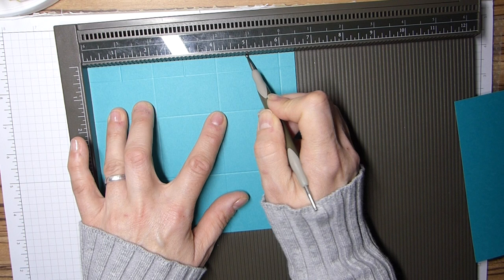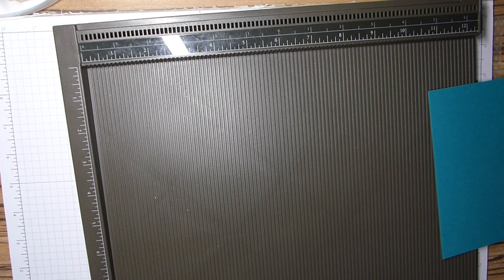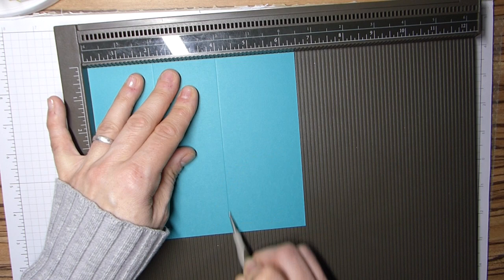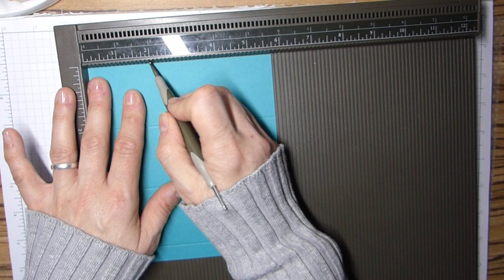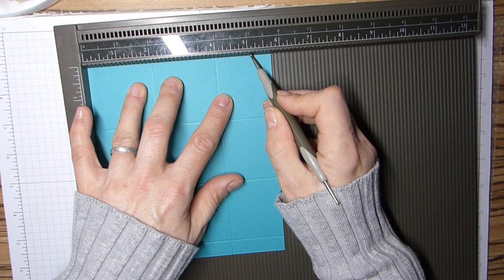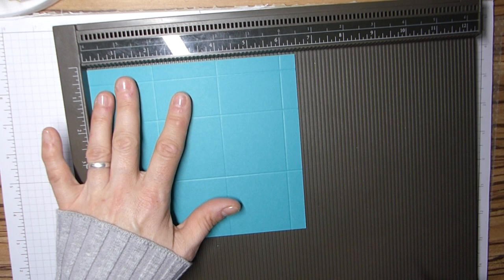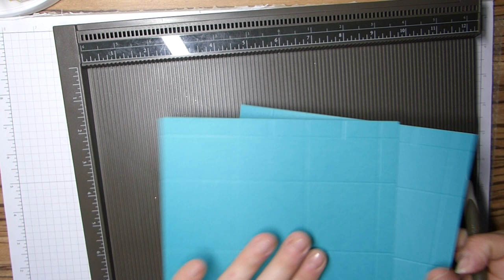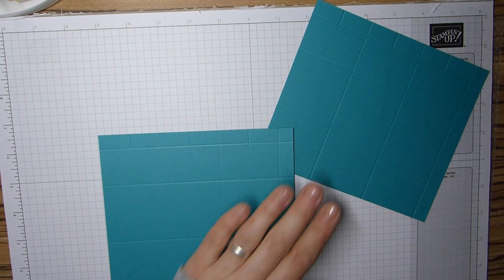I'm going to do that again, this time in centimeters. So 16 by 15 centimeters. On the long side we're going to score at five, ten, and fifteen centimeters. We're then going to rotate it and score at five, ten, and thirteen and a half. We're then going to rotate back and we're going to mark the top at two and a half, seven and a half, and twelve and a half centimeters.